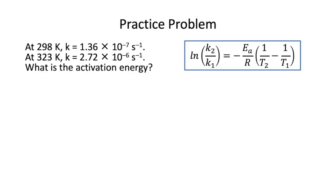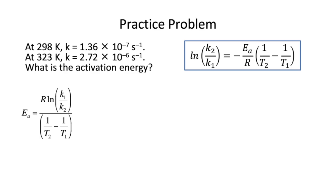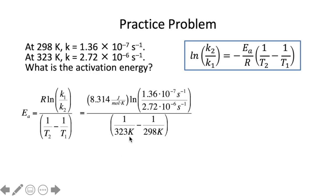Let's do a practice problem using this equation. The equation is set up so that you have two pairs of points — a temperature and rate constant 1, and a temperature and rate constant 2 — and you plug these in to find the activation energy. Pause the video and practice this on your own. If we rearrange the equation to solve for E_A and plug everything in with our rate constants and temperatures — making sure to match the pairs correctly — we get 95,900 joules per mole, or 95.9 kilojoules per mole, as our activation energy. You'll be asked to do this on your lab report.